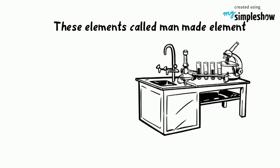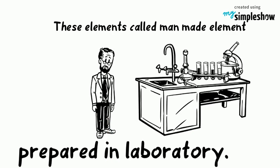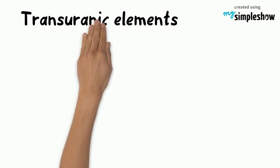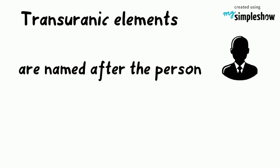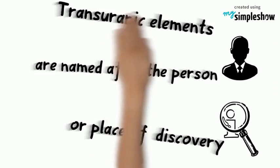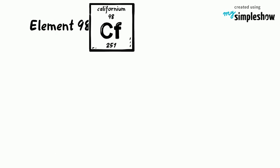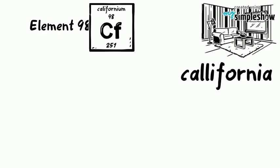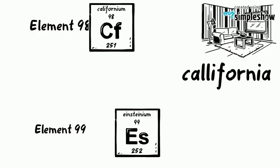These elements are prepared in the laboratory and are therefore called man-made elements. Transuranic elements are named after the person or place of discovery. For example, element 98 is called californium because it was discovered in California, and element 99 is called einsteinium based on the name of Einstein.